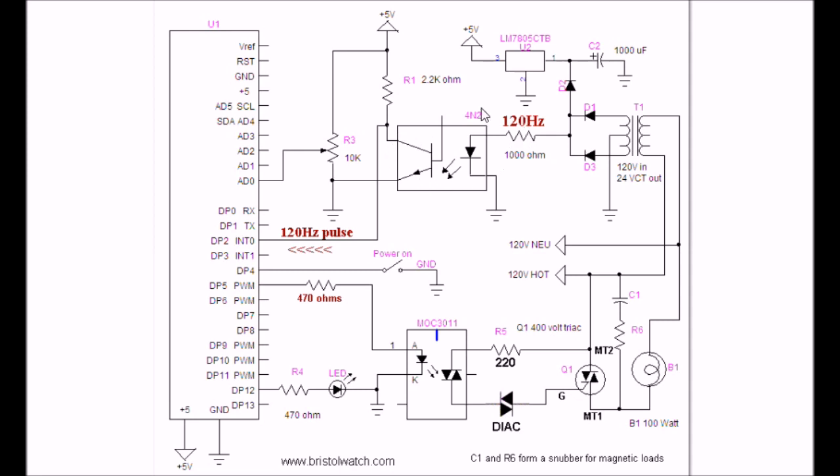This optocoupler circuit and this resistor produce a 120 Hz pulse that triggers the interrupt on an Arduino controller to operate this triac circuit to control the power output either on a lamp, motor, or whatever other load.